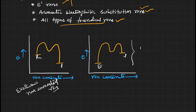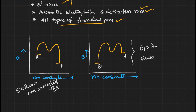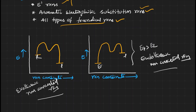In this second case, the energy of the product is greater than the energy of the reactant, meaning the reaction mixture is gaining energy. It requires energy for the reaction to occur — these kinds of reactions are endothermic. This is an exothermic non-concerted reaction, and this is an endothermic non-concerted reaction.